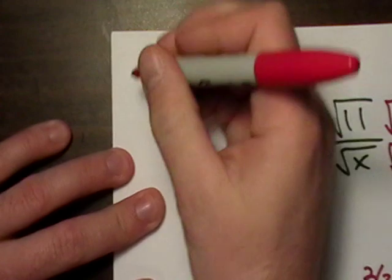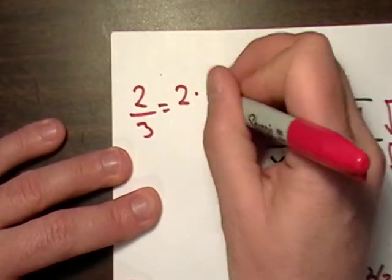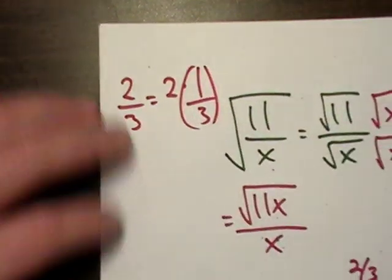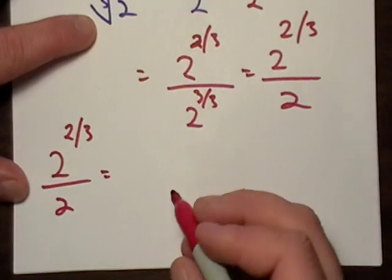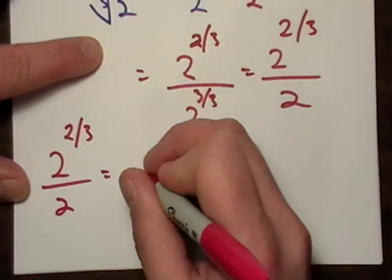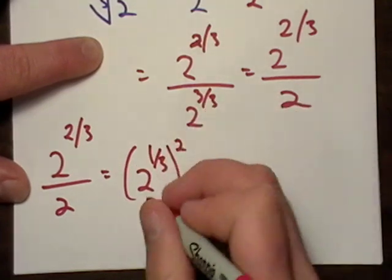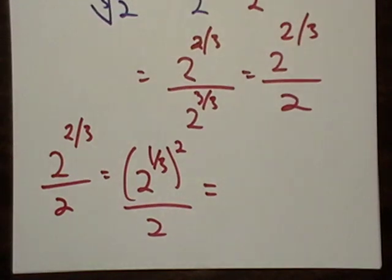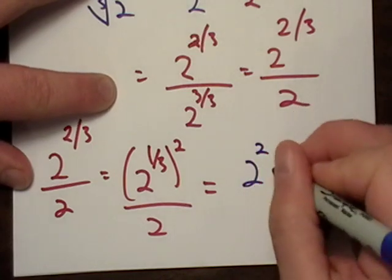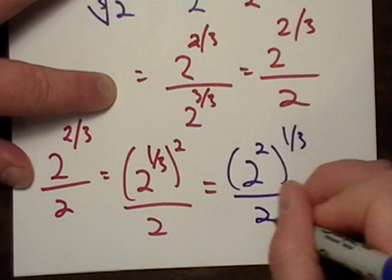What I can do here is I can break this up and I can break it up this way and then square the whole thing, or I can go 2 squared to the 1/3 and I can do it that way. See, all I did was I broke up the exponent.